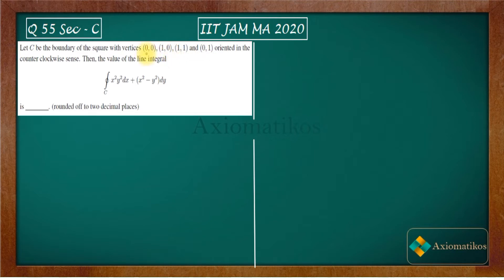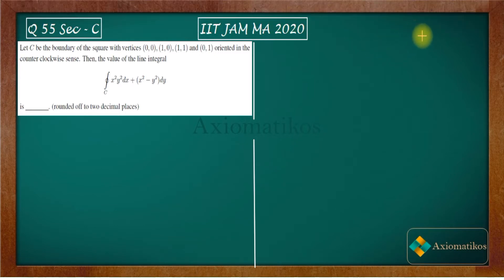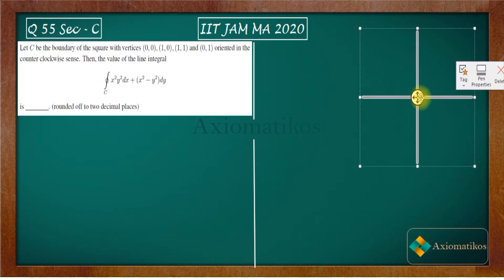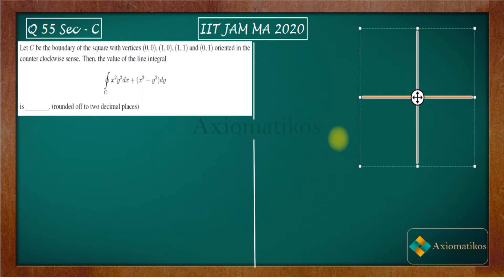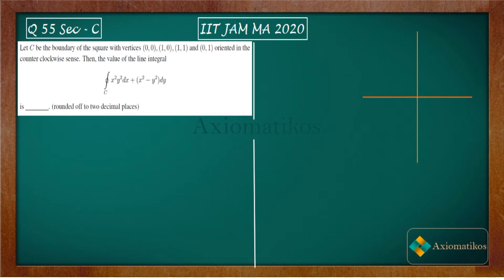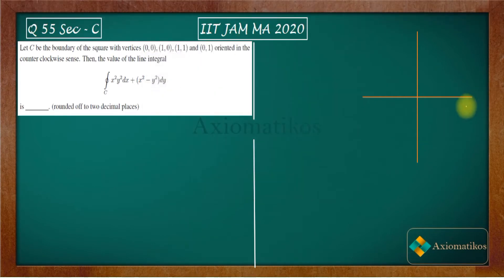First, notice that the square boundary is a closed curve. Because it is a closed curve, you can use a very important theorem to evaluate line integrals. Let me draw the graph to show that it's a closed figure so you can understand what I am doing.